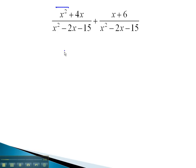x squared has no like term, but 4x can be combined with x to give us 5x. Finally, plus 6 at the end over our common denominator of x squared minus 2x minus 15.